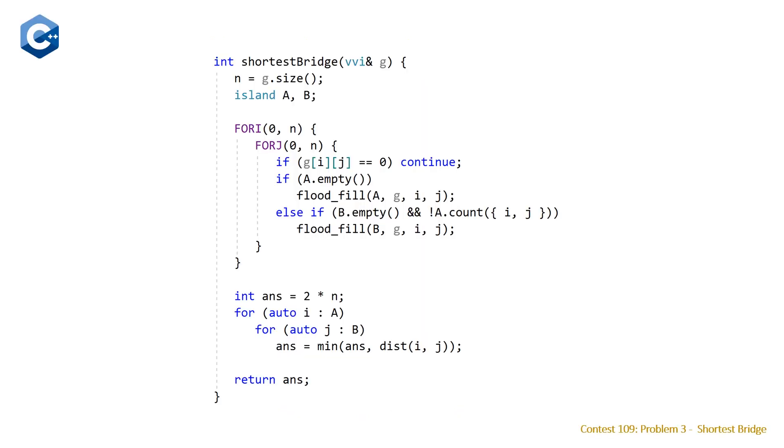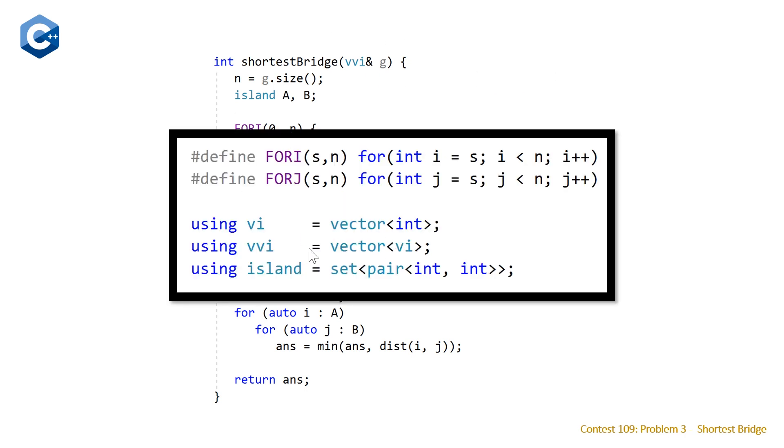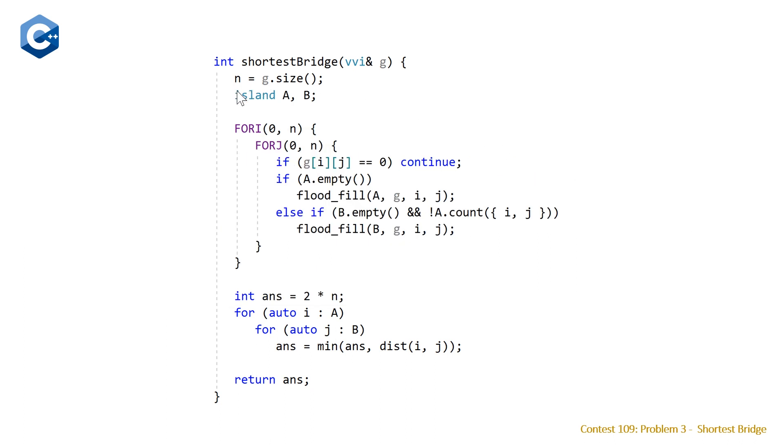Here is our C++ solution. We can see our function shortest bridge takes a two-dimensional vector, which we're calling G for grid, and returns an integer, which is going to be the minimum number of squares or elements we need to fill in to connect the two islands. Note that VVI here stands for vector of vector of integers, and island, which is right below it, stands for a set of pair of two integers. We have our macros as usual. We have our N declared in the solution class outside so we don't need to pass it into other functions. We're just setting that equal to the dimension of our 2D grid. Then we have our two islands, our set of pairs A and B declared here.